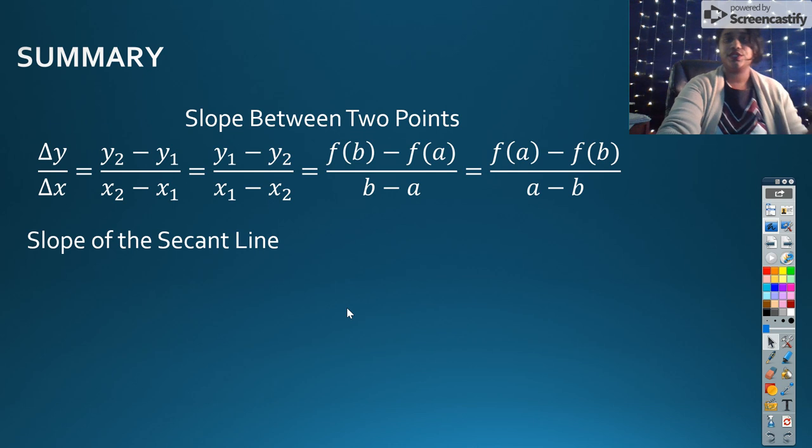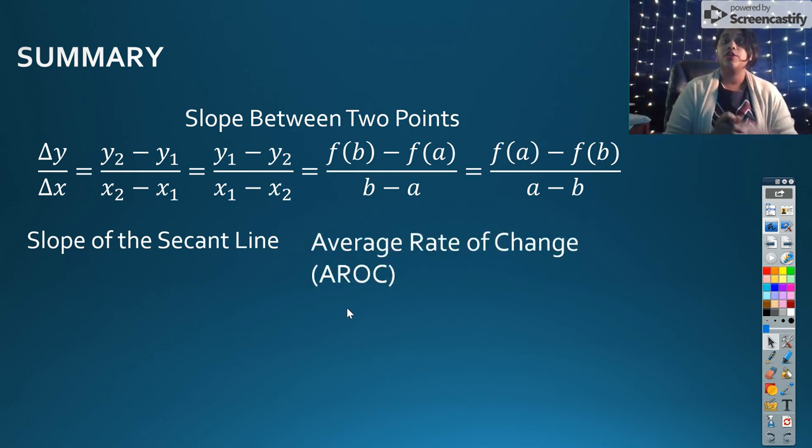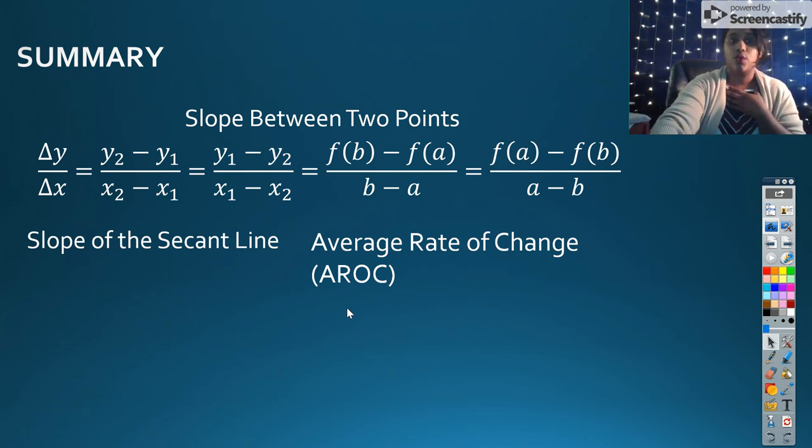And so right now, this is the slope of the secant line. What is a secant line? It's a line that hits my curve at exactly two points. The slope of my secant line is what we call the average rate of change. This is an estimation of the rate of change between all of these points.